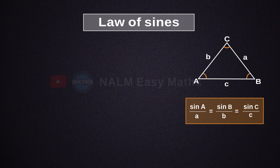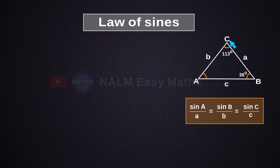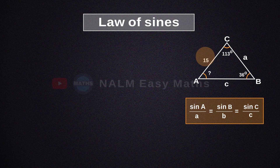The given values are: angle B equals 36 degrees, angle C equals 113 degrees, and angle A is unknown. Side B equals 15, while side A and side C are also unknown.